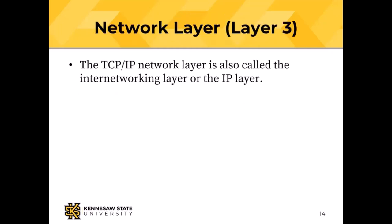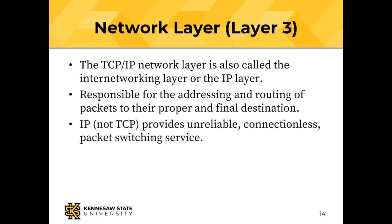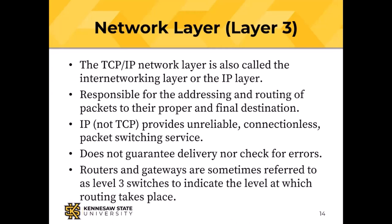At the network layer — also called the inter-networking layer or IP layer — is responsible for addressing and routing: how packets get from point A to point B. IP, but not TCP, provides unreliable (no acknowledgement), connectionless, unreliable connectionless packet switching. The reliable and connection-oriented parts happen at the TCP layer. IP does not guarantee delivery of packets and doesn't check for errors, but that's okay because TCP does both. Routers and gateways are sometimes referred to as level three switches to indicate that routing takes place at level three of the TCP/IP stack.